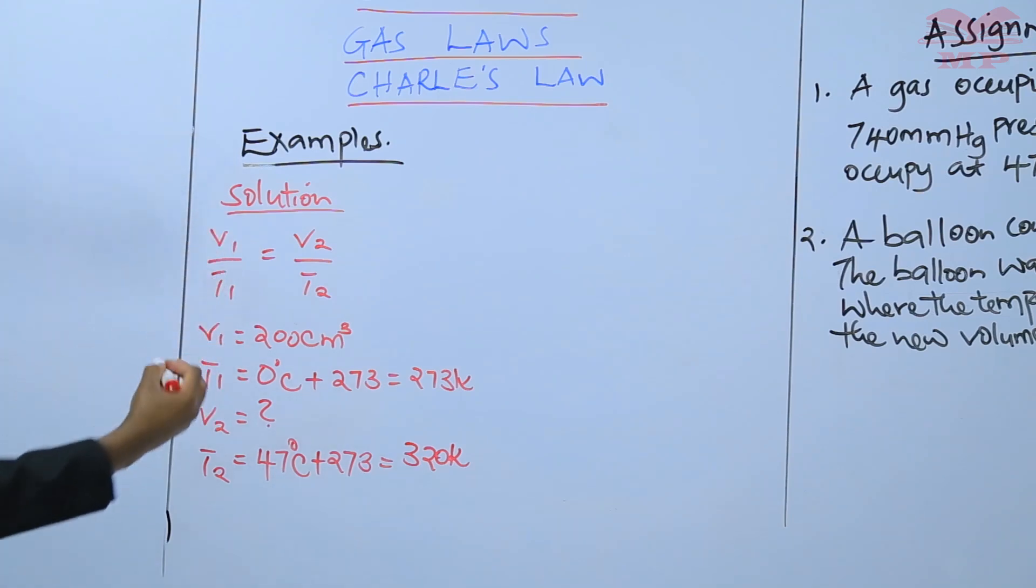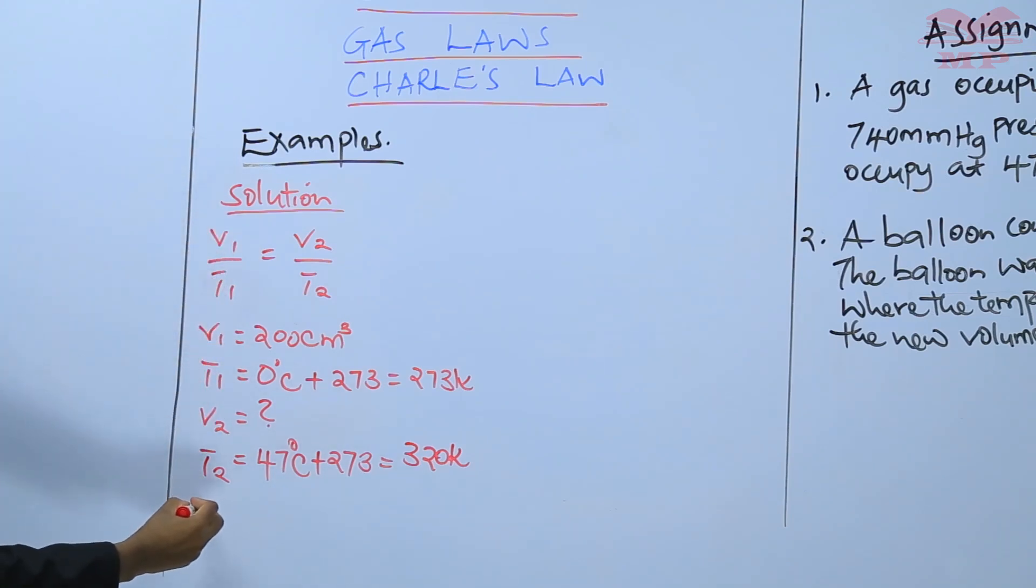Now from the formula you can be able to substitute. The V1 is 200 divided by T1. T1 is now 273. Then V2, we don't have V2 and that's what you're looking for. And T2 is 320 Kelvin.